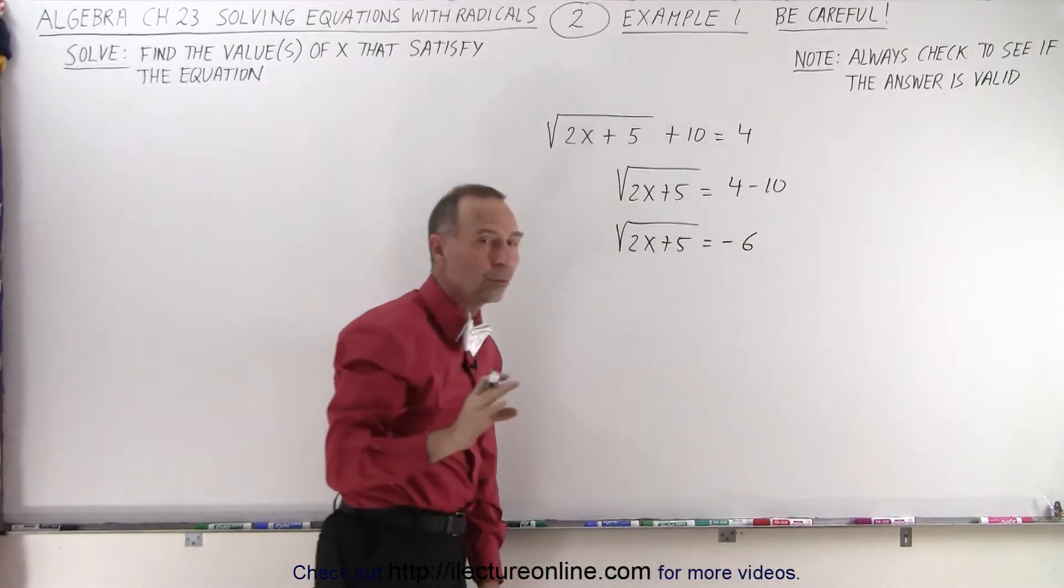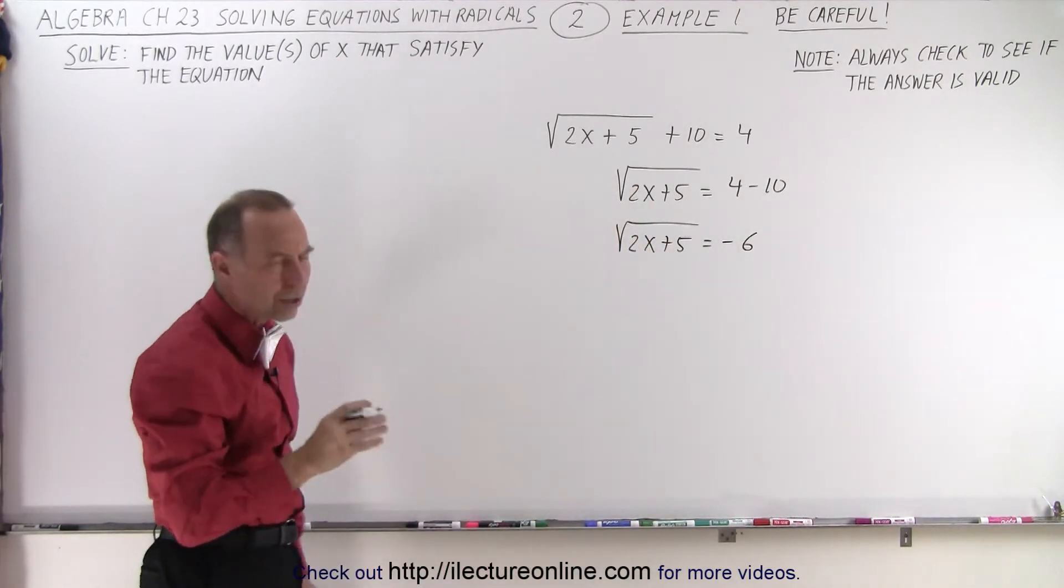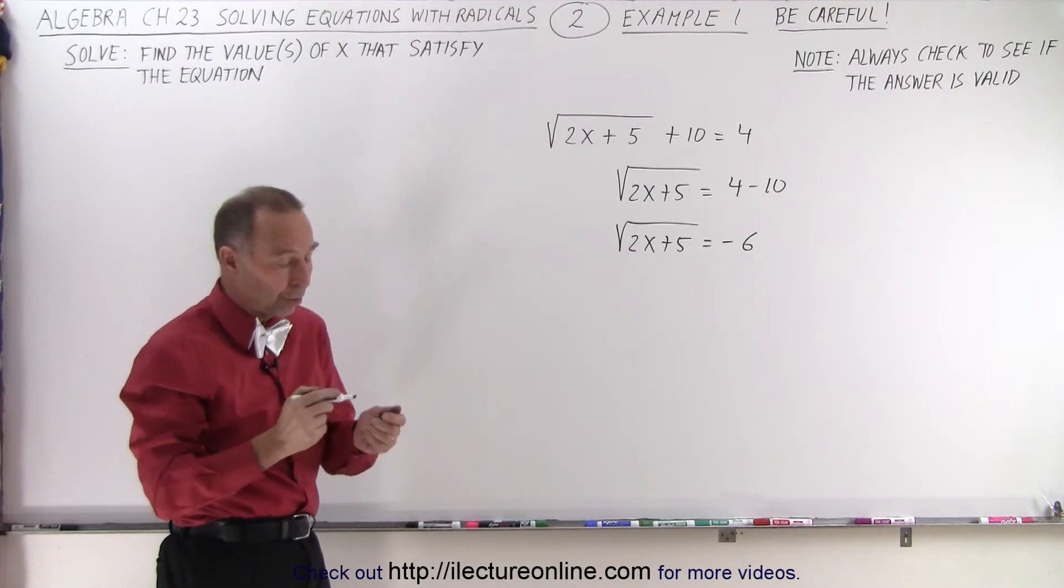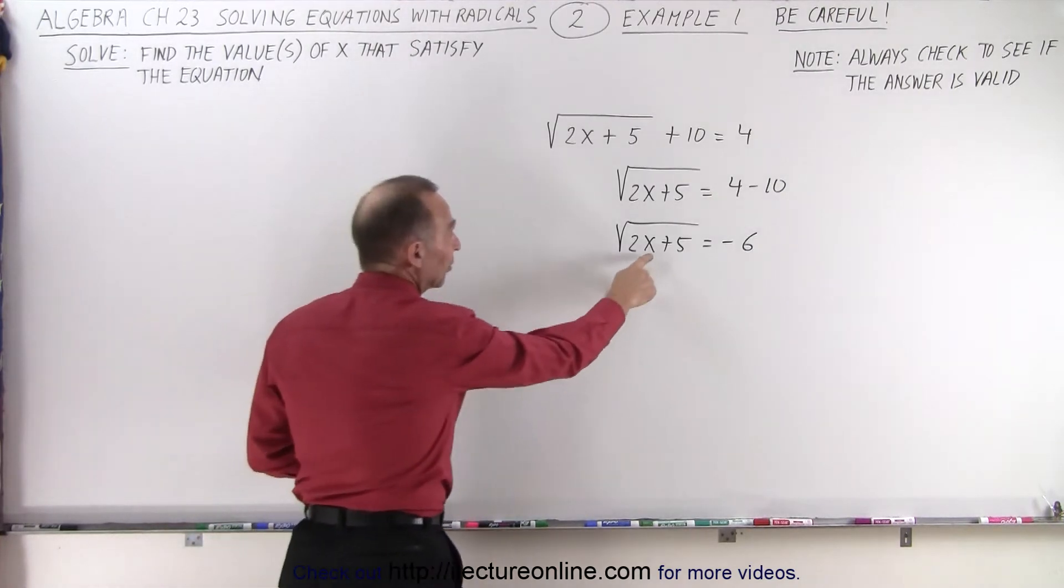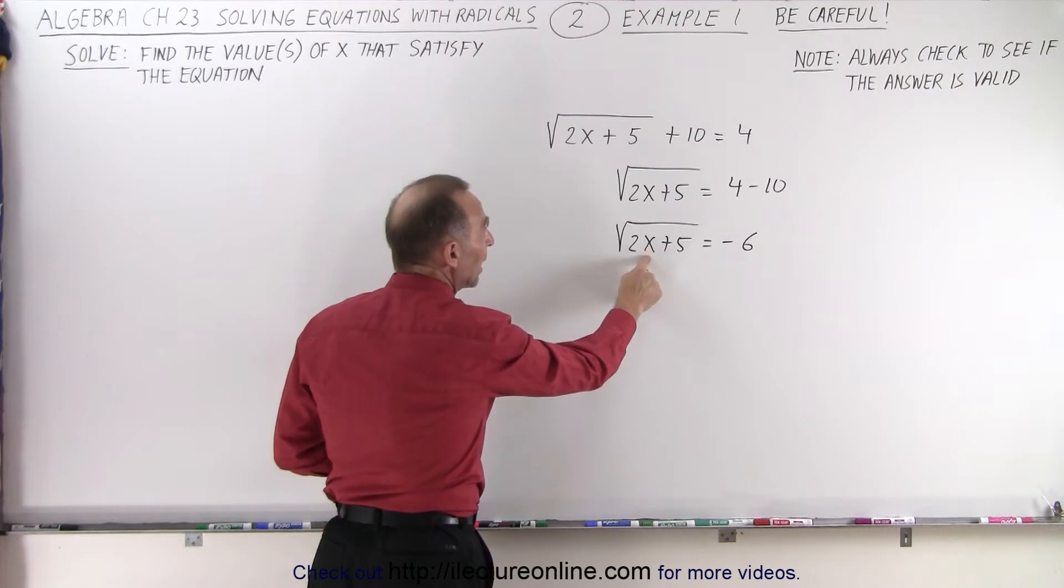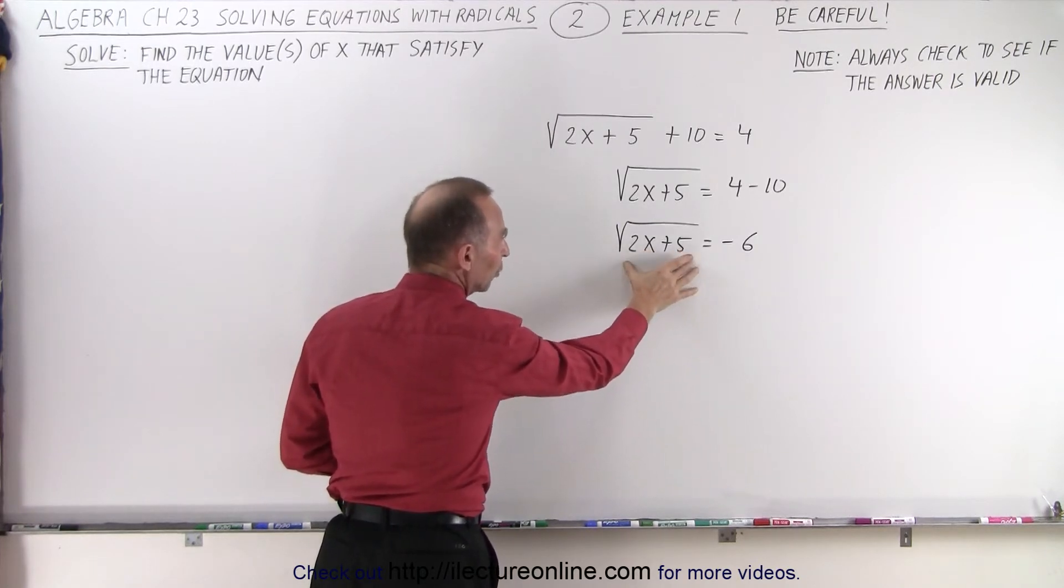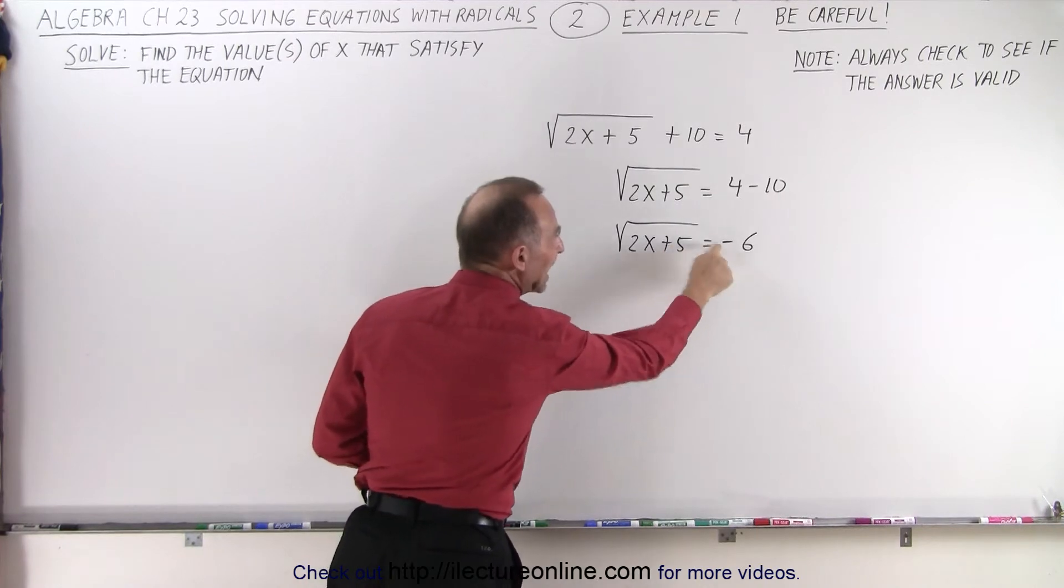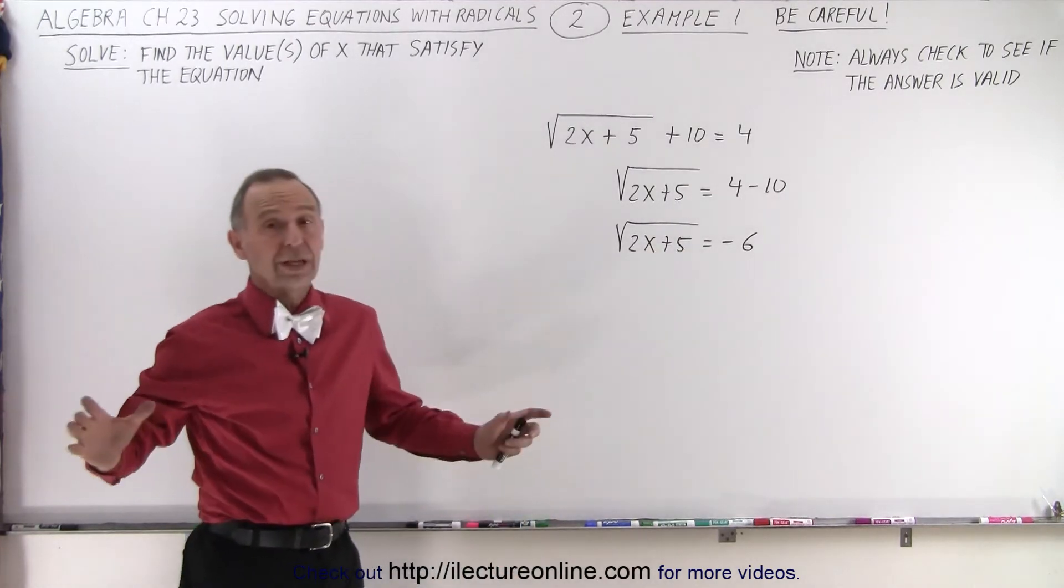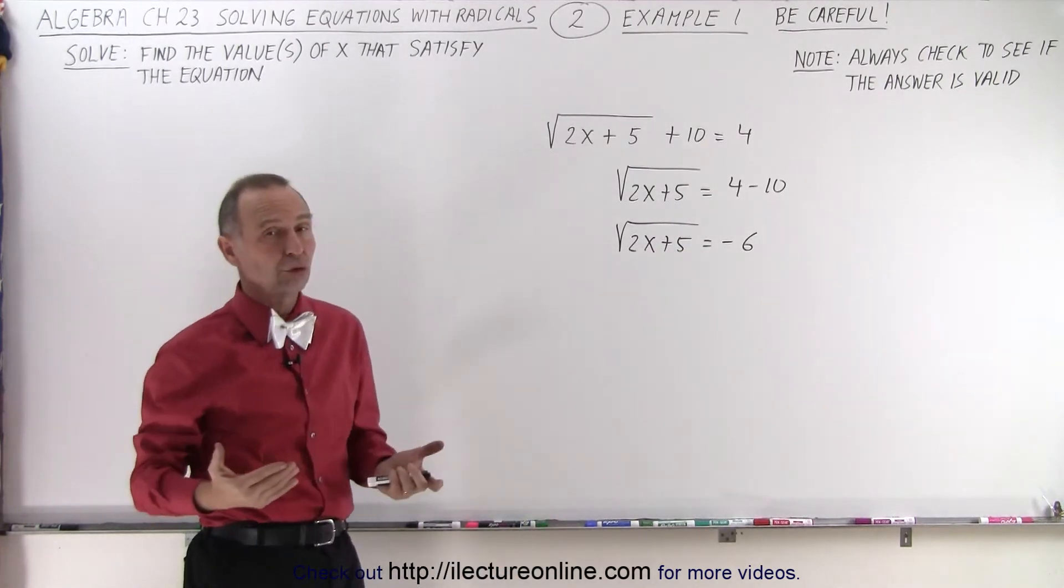Here, we should take note. How can the square root of something equal a negative number regardless of the value of x? It doesn't matter. There's no way I can plug in any value for x that will make the square root of this quantity right here equal to a negative number. So here, we can simply say there is no solution.